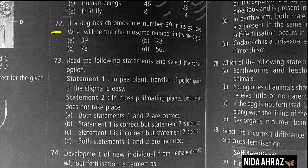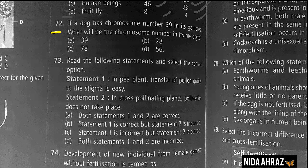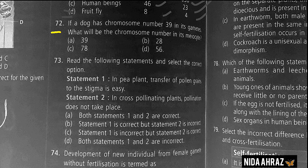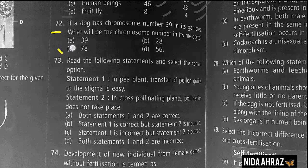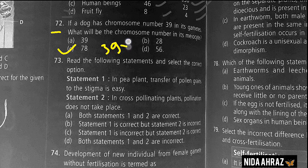If a dog has chromosome number 39 in its gametes, what will be the chromosome number in its meiocytes? It's going to be 39 × 2 = 78. Option C is the correct choice.